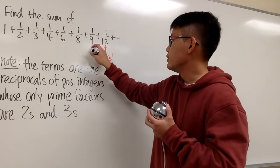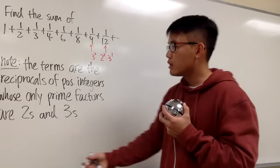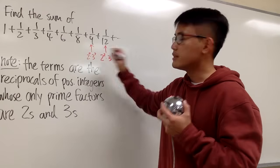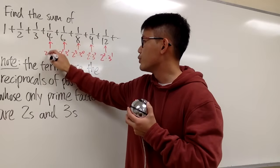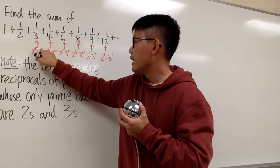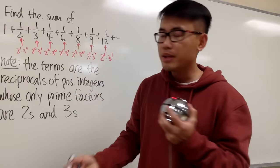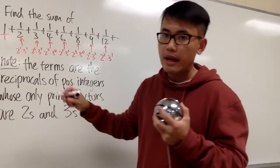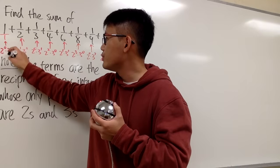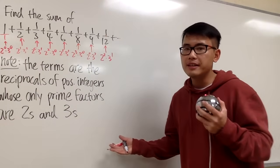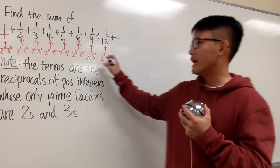We can do the same thing for the other denominators. For 9, we know 3 times 3 is 9, so I can write this as 2 to the 0 times 3 squared. For 8, this is 2 to the 3rd power times 3 to the 0. For 6, this is 2 to the 1st times 3 to the 1st. For 4, it's 2 squared times 3 to the 0. For 3, it's 2 to the 0 times 3 to the 1st. For 2, it's 2 to the 1st times 3 to the 0. And for 1, that's 2 to the 0 times 3 to the 0. So the denominators are just products of powers of 2s and 3s, sometimes with 0 exponents.